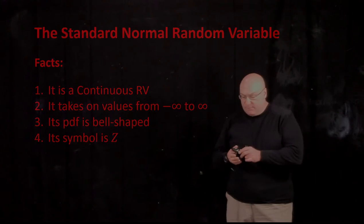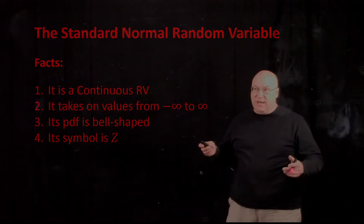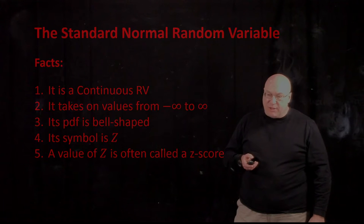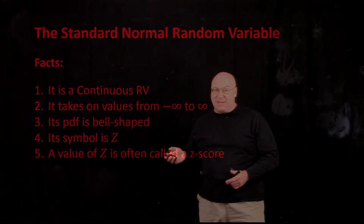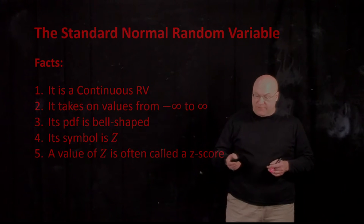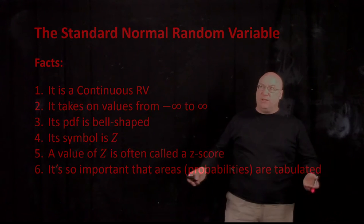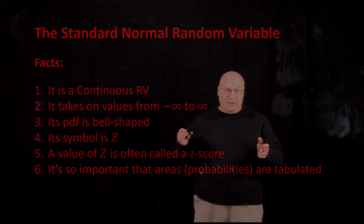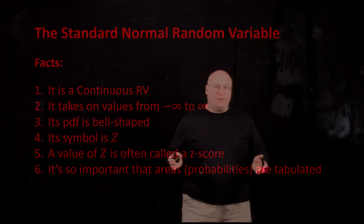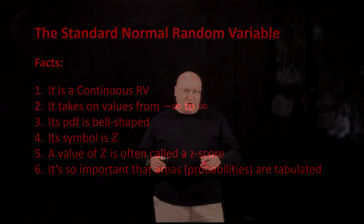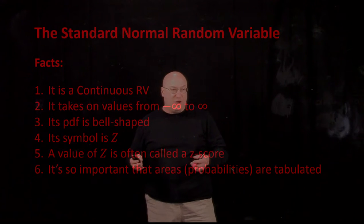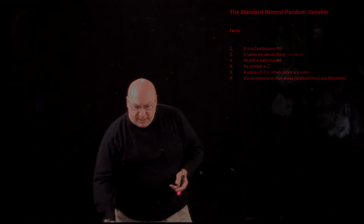Its PDF is bell-shaped — this is where we get that famous notion of a bell-shaped curve. The letter we use for it is the capital Z. When you see capital Z from now on, it means the standard normal random variable. We call a particular value a Z-score, which connects back with a notion we've seen before. It's very hard to compute probabilities over intervals — you need calculus — but it's so important that all of that has been worked out and tabulated. You can find Z-tables on the web, in any textbook, or in any statistical software package.